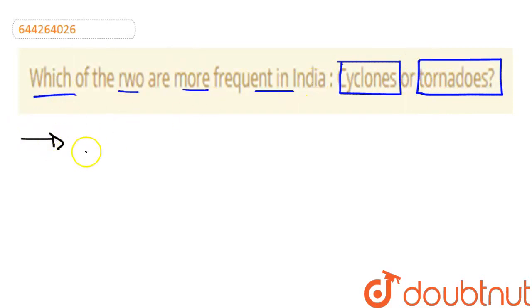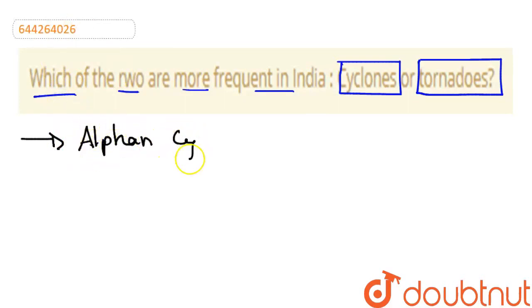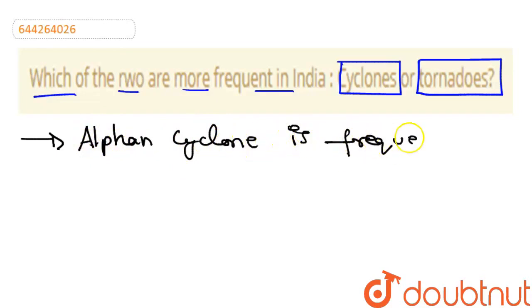Let's talk about cyclones in India. Most frequently cyclones are called alphans. Cyclone is frequent in India.